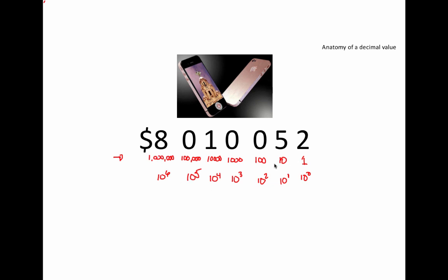So, if we were to decipher each of these digits based on their position, we would now say that they are 8 times 10 to the 6, plus 1 times 10 to the 4, plus 5 times 10 to the 1, and finally 2 times 10 to the 0. If we add all of these values, we will end up with this value right here.